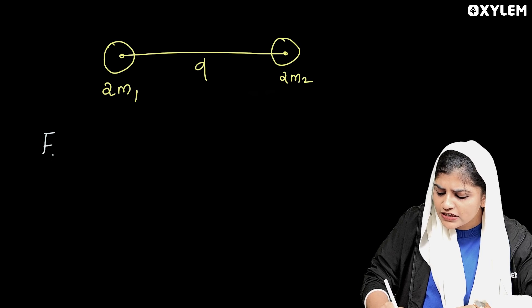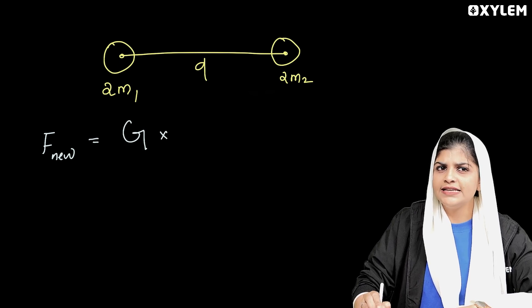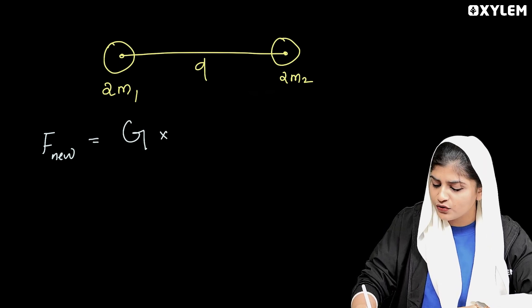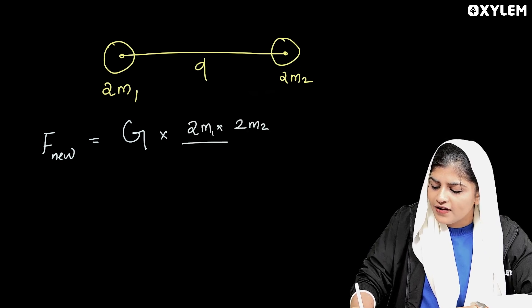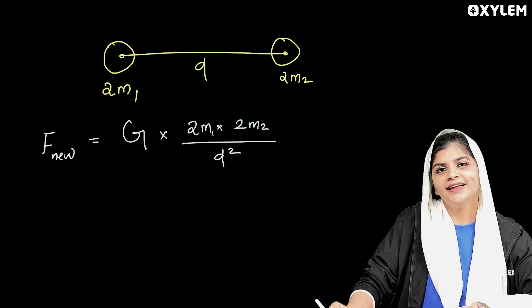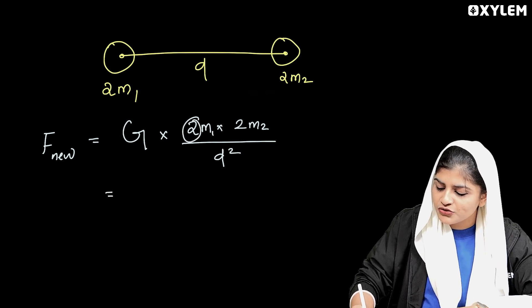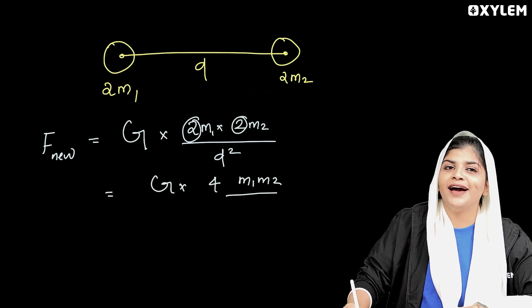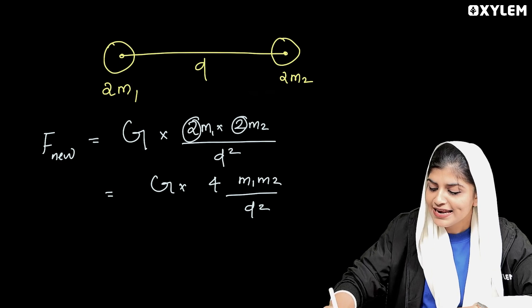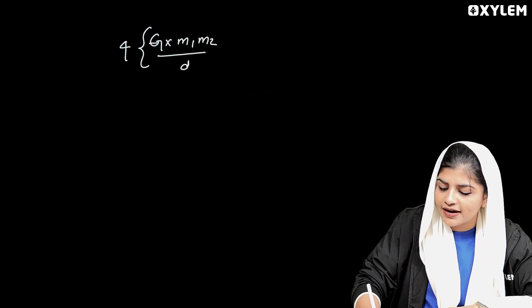In the new case, we calculate the new force. F new equals G into 2M1 into 2M2 divided by D squared. Two into two gives us 4. So F new equals G into 4·M1·M2 divided by D squared.